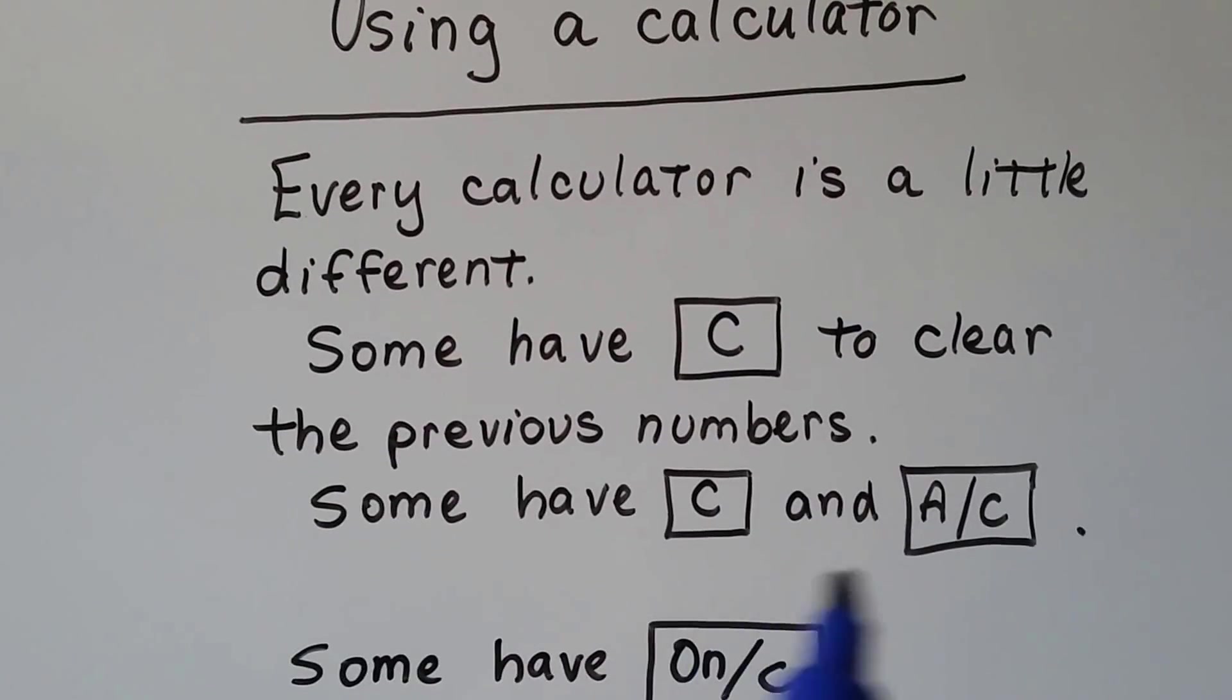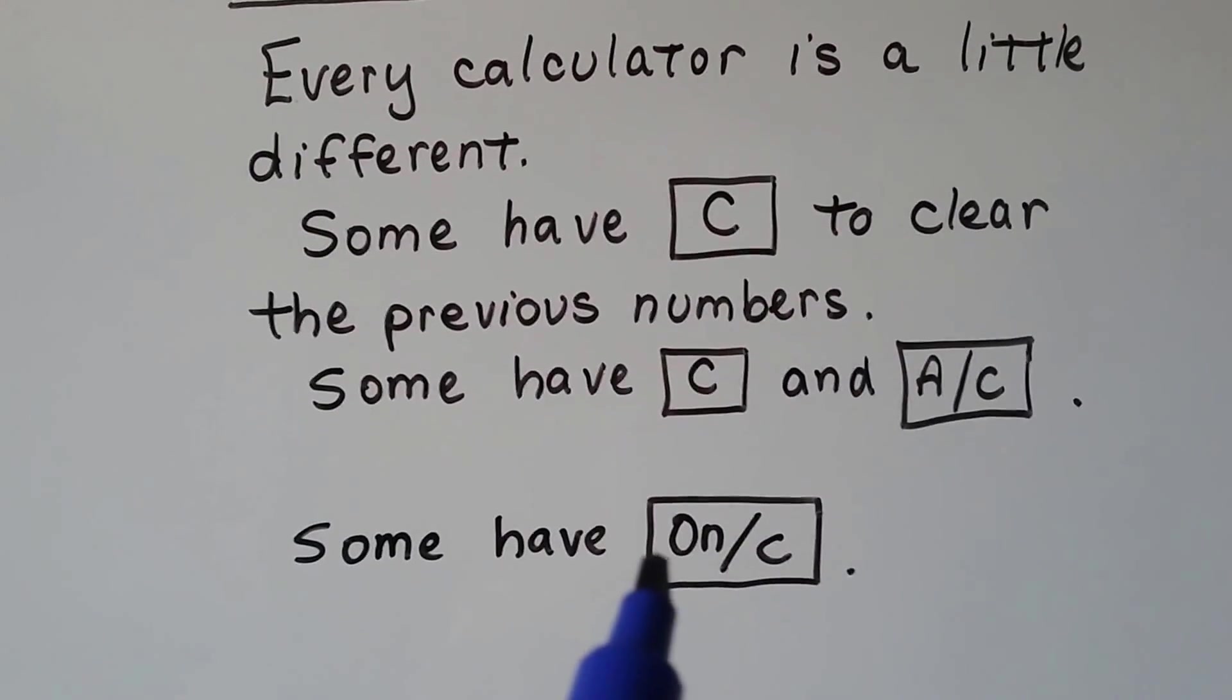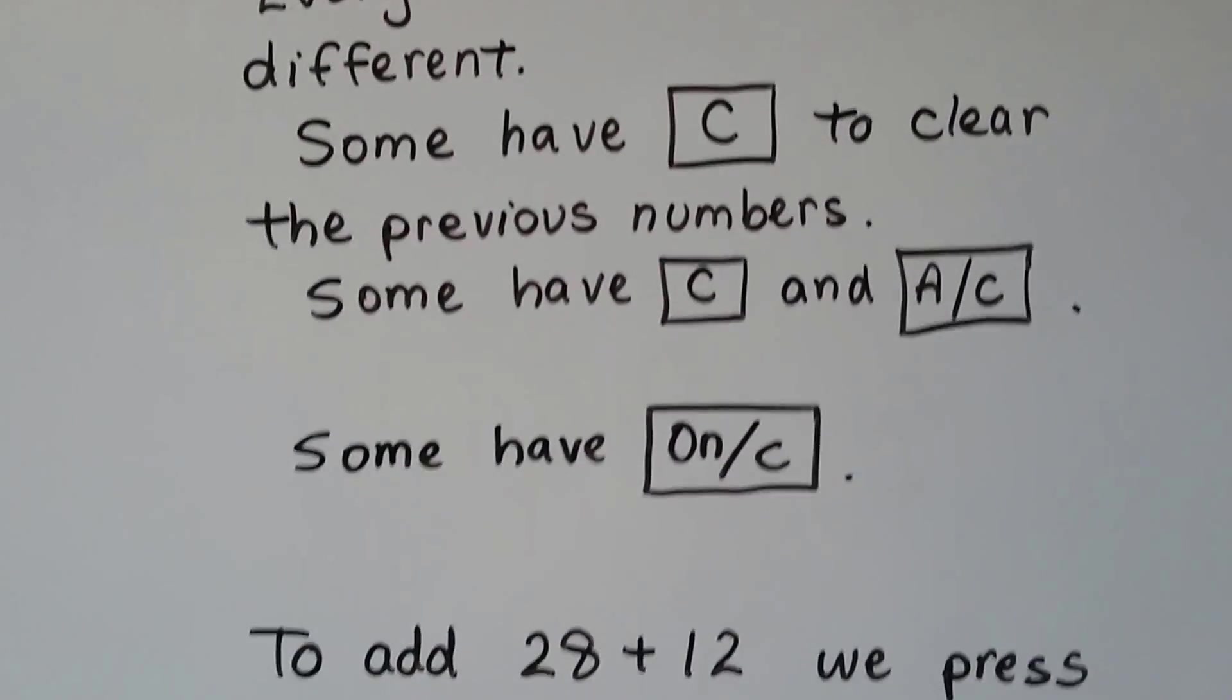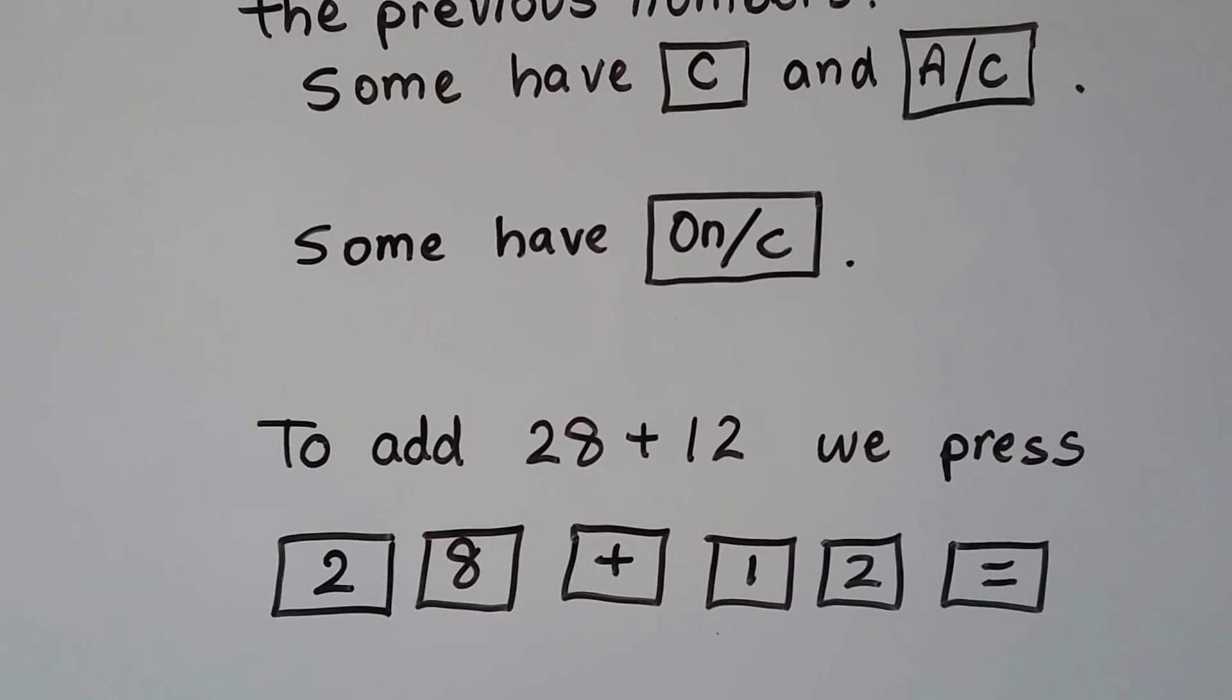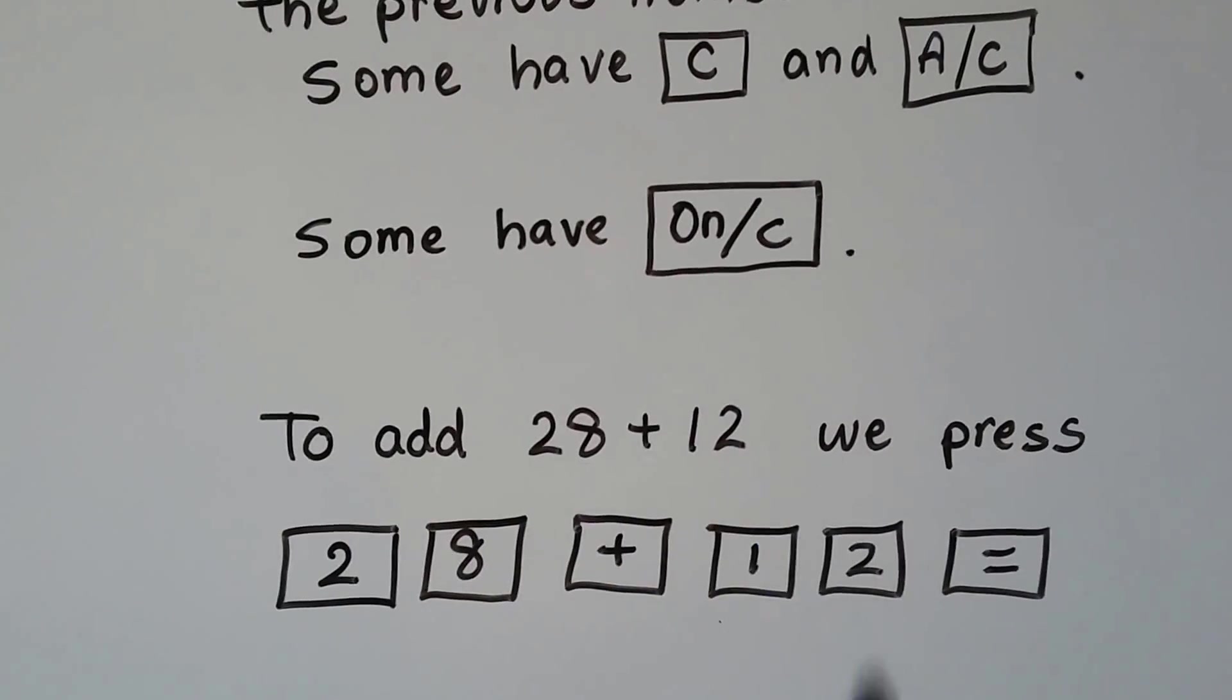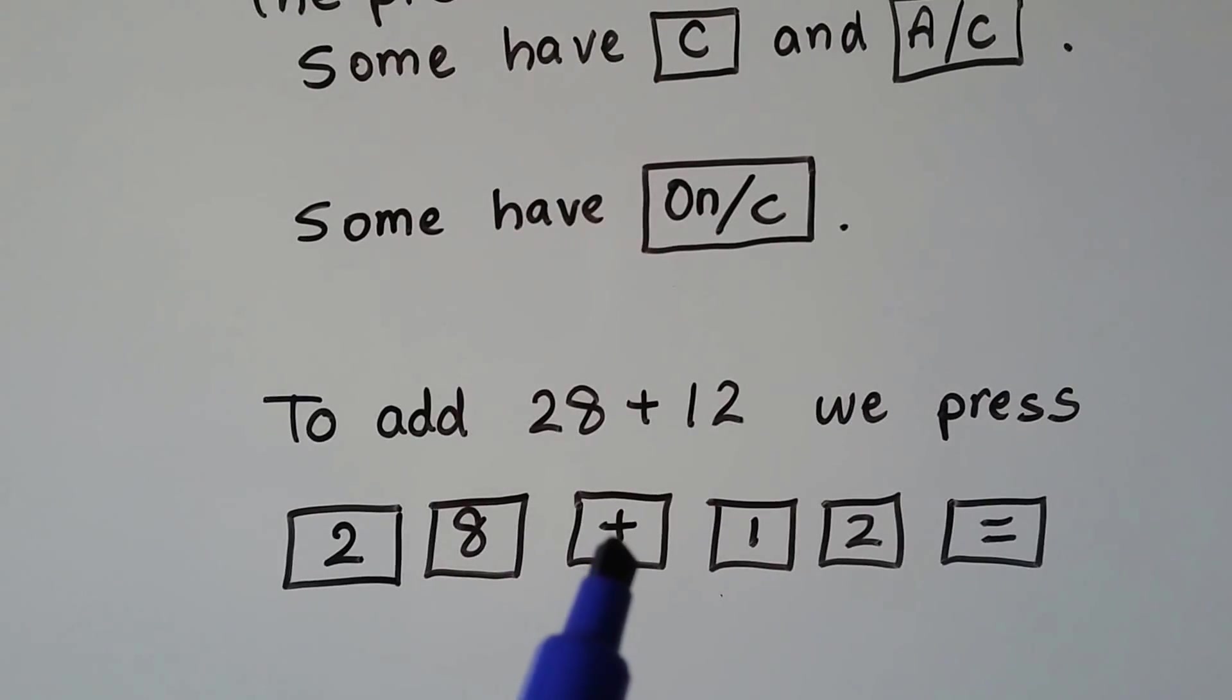Some have a C and an AC. Some have an on/C. If we wanted to add 28 plus 12, we have to push each thing separately. We would have to push the 2, then we push the 8, then we push the plus sign.